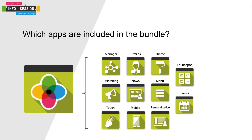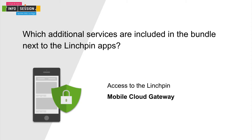When you think about a bundle, your first question could be which apps are included. The bundle provides all the functionalities you need for a social intranet based on Confluence. All the Linchpin core apps such as the Linchpin Manager, Linchpin Events, and Linchpin User Profiles are bundled in the Linchpin Intranet Suite app. This also includes Linchpin Mobile and Linchpin Touch. Exclusively with the bundle, you get access to the Linchpin Mobile Cloud Gateway without additional charges, so you can use Linchpin Mobile securely behind the firewall out of the box.